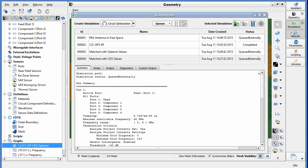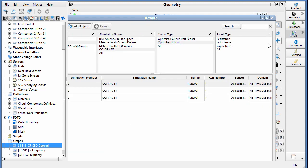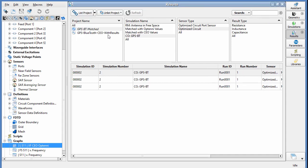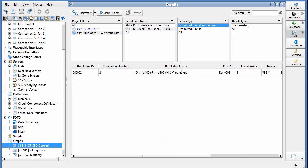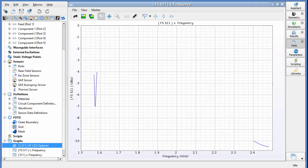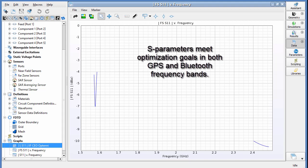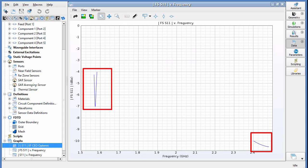Going to simulation results, we can look at circuit optimization results. Here we see the S-parameters meeting the goals in both GPS and Bluetooth frequency bands. Notice how CEO can optimize over two different frequency bands at one time.